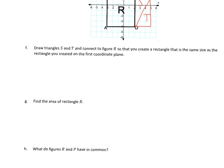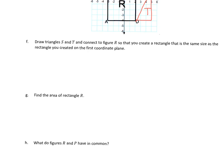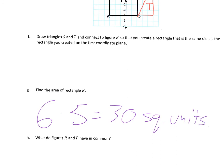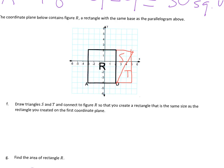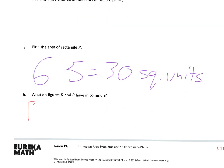Find the area of rectangle R. It looks like we have 6 by 1, 2, 3, 4, 5 — so 6 times 5 is 30 square units. And what do figures R and P have in common? They're the exact same — they just look different because one is flipped. Both have the same area.